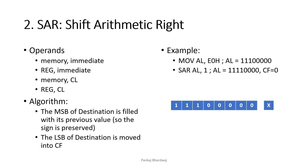Next is SAR, that is shift arithmetic right. We shift the bits to the right. The algorithm is that the MSB of the destination is filled with its previous value, so the sign is preserved. LSB of the destination is moved to CF.